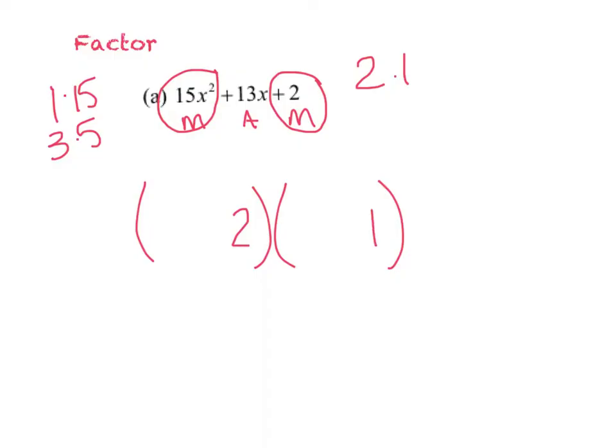Let's talk about our signs. If I'm multiplying to a positive, that means the signs are the same. And if I'm adding to a positive, that means they're both positive. Alright, so let's just go for it. Let's try 1 and 15. I'm going to try my 15x here, and my 1x here, and see what I get. So I'm going to draw my outsides and my insides, and I need to get 13.